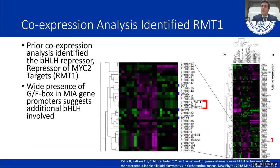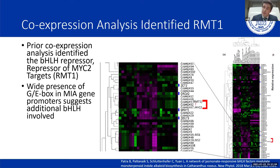Our lab has invested considerable effort in bHLH transcription factors in Catharanthus roseus in the MIA biosynthesis pathway. One well-acknowledged master regulator, MYC2, led to identification of the repressor MYC2 Target One bHLH transcription factor. G-boxes are present in many MIA gene promoters, suggesting additional bHLH factors are involved. MYC2 activates gene expression while the repressor of MYC2 targets represses those target genes — forming the beginning of a regulatory feedback loop — which led to identification of another potential regulator, CRbHLH92, which is tightly co-expressed with MIA pathway genes.